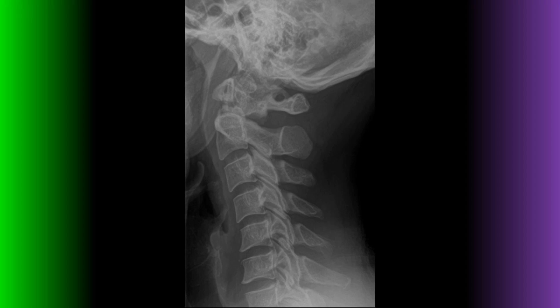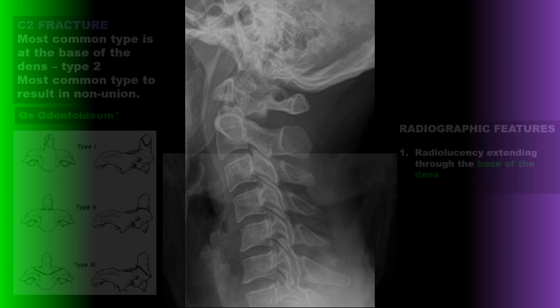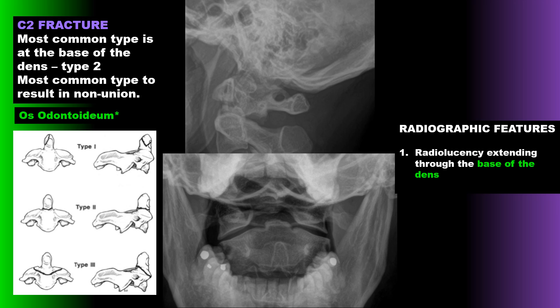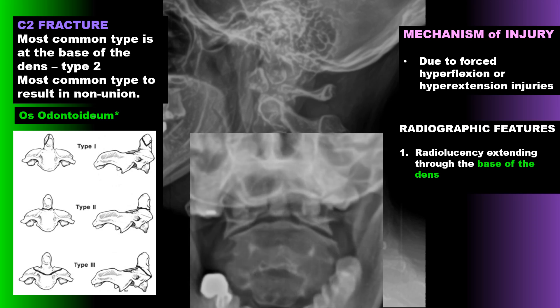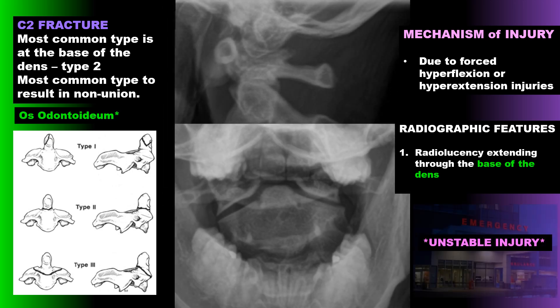Here's an example of a previous C2 fracture. One of the most common fractures of C2 is the base of the dens, and this is the most common type to result in a non-union, sometimes called an os odontoideum. Radiographically, we're looking for a radiolucency extending through the base of the dens. The mechanism of injury is forced hyperflexion or forced hyperextension. These fractures are an unstable injury and require neurosurgical consultation.